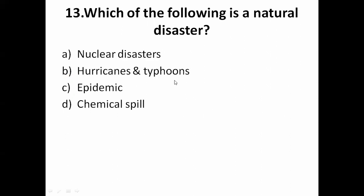Which of the following is a natural disaster? Nuclear disaster, epidemic, and chemical spill are man-made disasters. The correct answer is B — hurricane and typhoon, which are natural disasters.